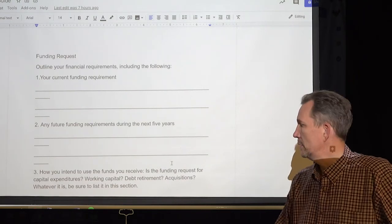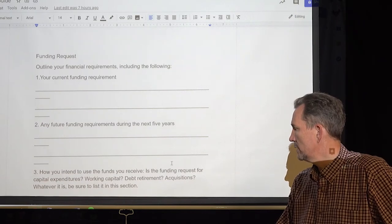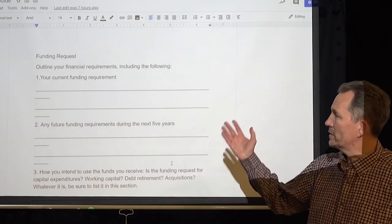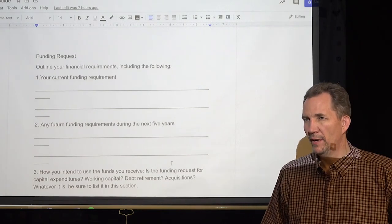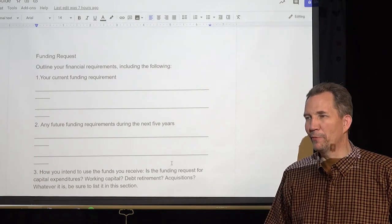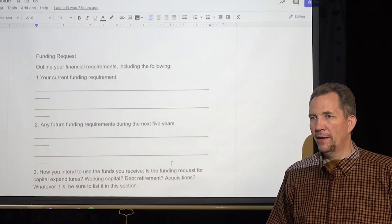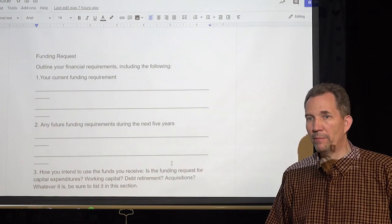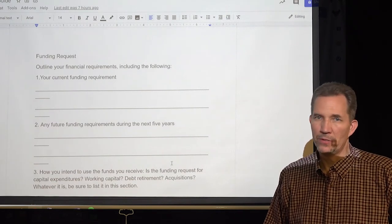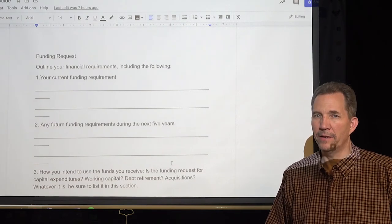Acquisitions. I need to buy more equipment. Whatever it is, be sure to list it in this section. One thing I didn't really say here is my nature is I don't like to ask people for money. I've never been a guy that would ask for a handout. That isn't my nature. I've helped a lot of people and sometimes you don't call it a handout, but a hand up.